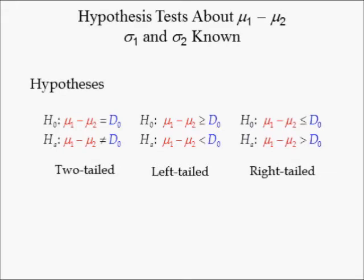In a right or upper-tailed test, the difference in population means is less than or equal to its hypothesized difference under the null hypothesis. The opposite is the alternative hypothesis, which states the difference in population means is greater than its hypothesized difference. Notice that the null hypothesis is associated with the equal sign, and the alternative hypothesis identifies the test as upper or right-tailed.